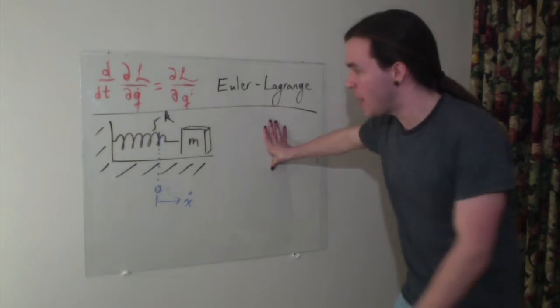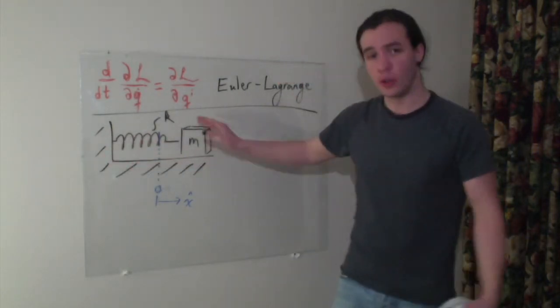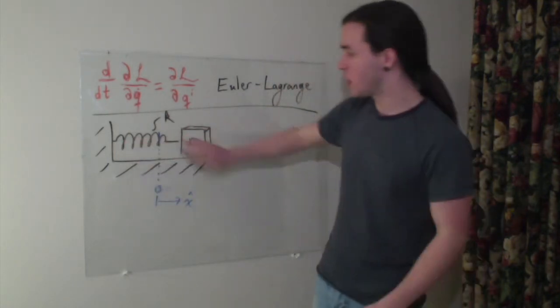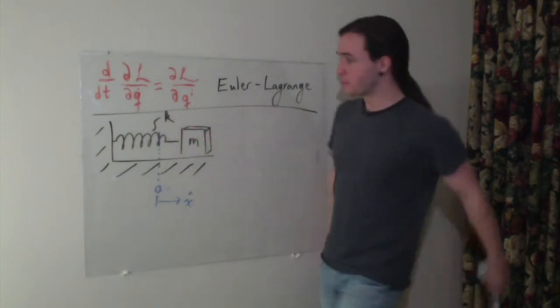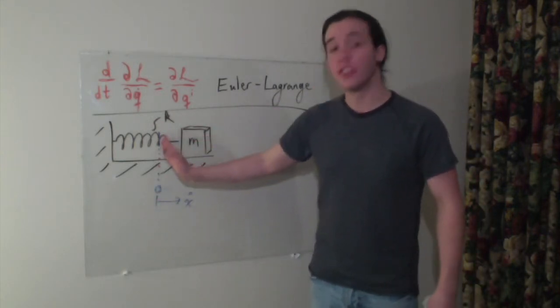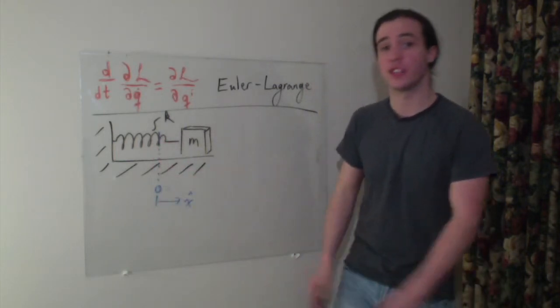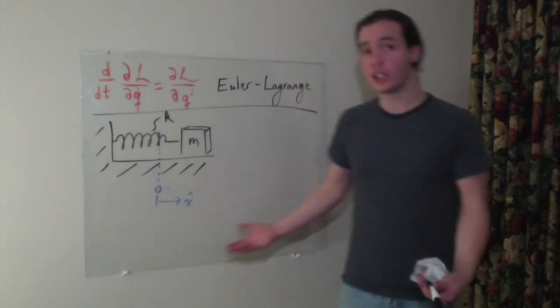So for the mass-spring system, we have just a regular wall here, the ground, no coefficient of friction on the ground, just frictionless. We've got a spring here attached to the mass. So the spring has a constant k, the mass is mass m, and we're going to define our zero to be right here at the equilibrium point of the spring. And this is going to be the positive x-direction.